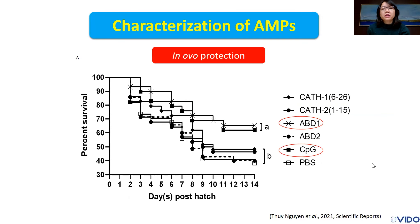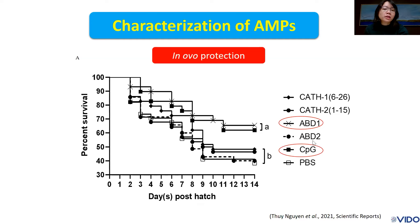We then tried to characterize more innate immune stimulants, focusing on avian antimicrobial peptides. Based on individual experiments, we chose three most potential peptides with the highest bacterial killing effect: cathelicidin 1, cathelicidin 2, and avian beta-defensin 1. Avian beta-defensin 2 had the lowest antimicrobial effect. We conducted the experiment with the CpG group as the control, and found that avian beta-defensin 1 had a comparable protective effect with CpG following 14 days of challenge.